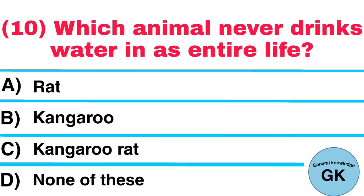Question number 10. Which animal never drinks water in his entire life? A. Rat. B. Kangaroo. C. Kangaroo rat. D. None of these. Answer: Kangaroo rat.